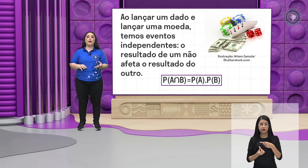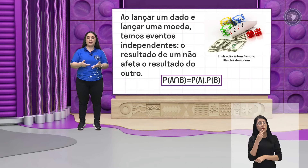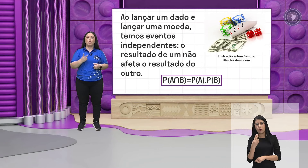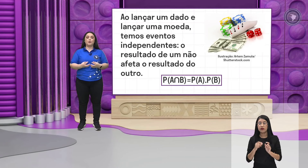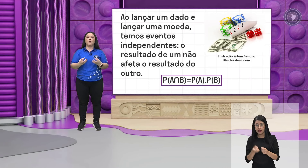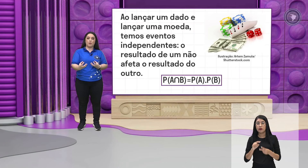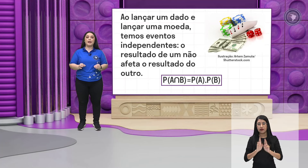E se eu lançar uma moeda e quero saber a probabilidade de sair a cara da moeda, a gente tem somente cara ou coroa. Meu espaço amostral é de dois elementos, cara ou coroa. Para sair uma cara, eu só tenho uma opção. Então, seria 1 sobre 2. Ou seja, o lançamento do dado e o lançamento da moeda não vão interferir um no outro. Então, esses dois eventos — lançar uma moeda e lançar um dado — são eventos independentes.